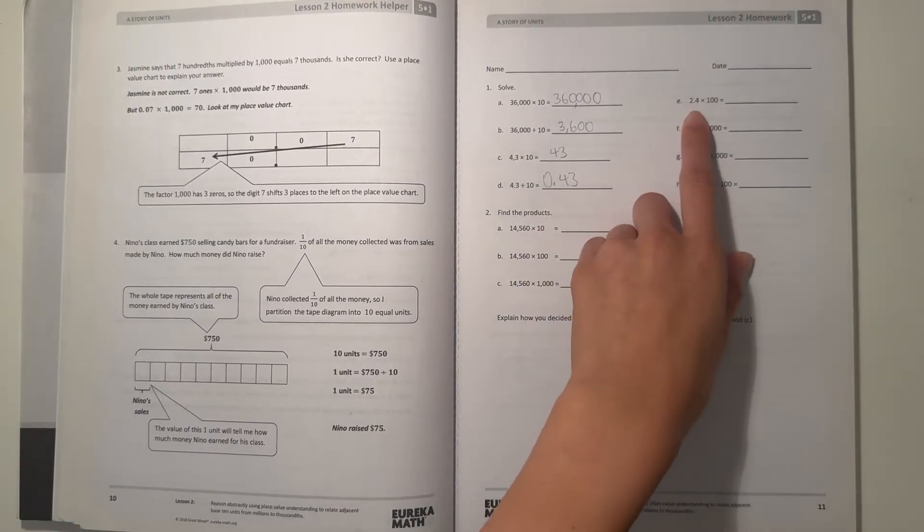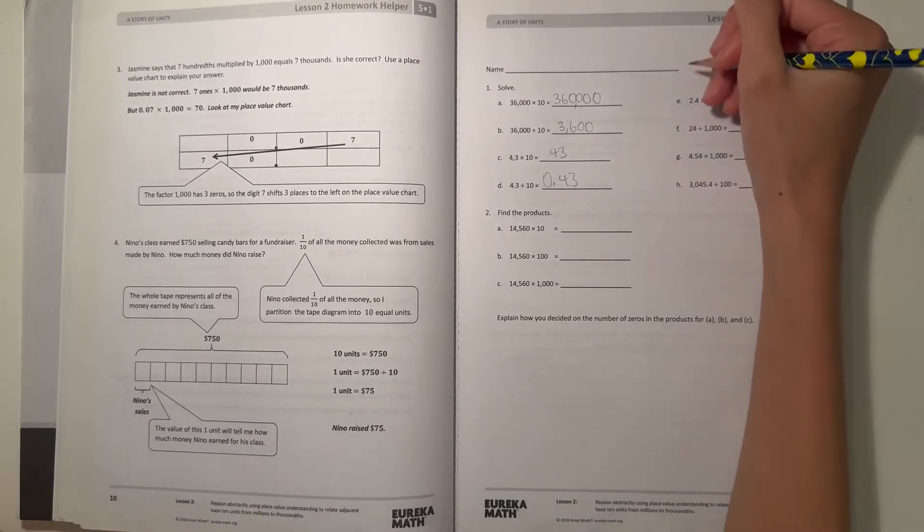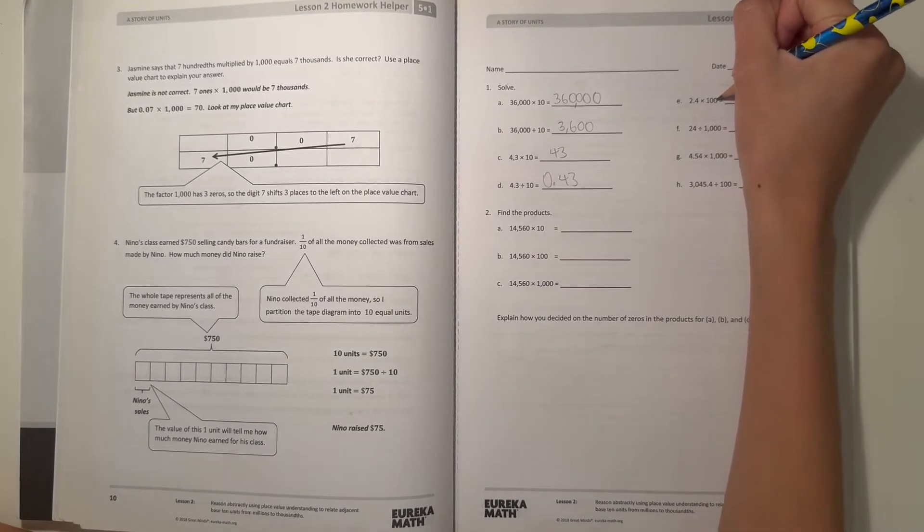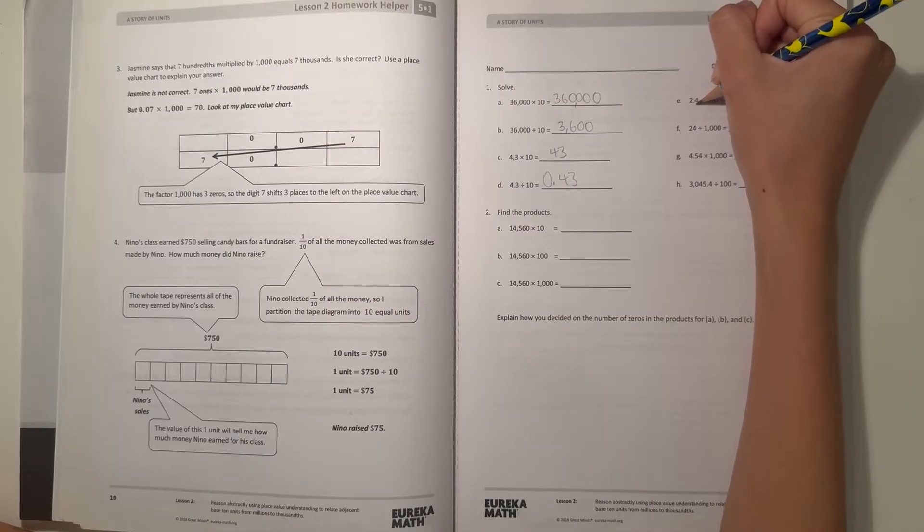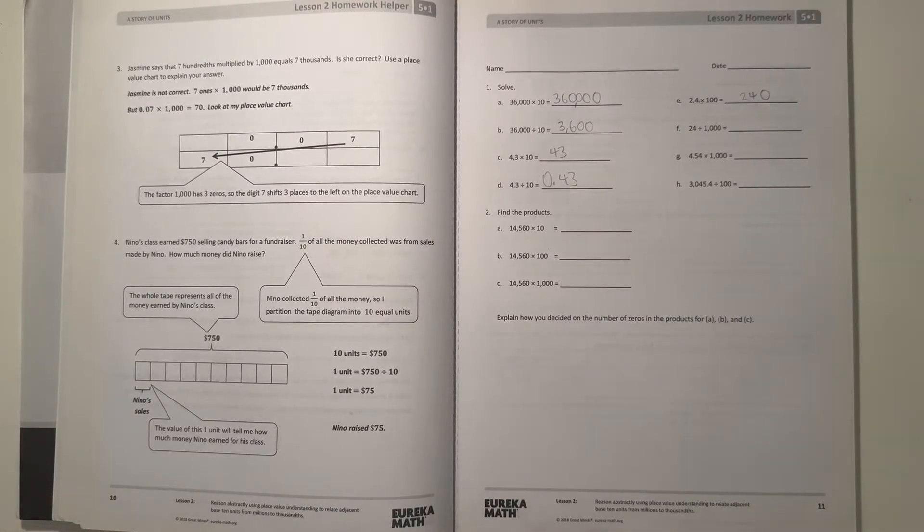Alright, and E, 2.4 times 100. So let's multiply, so let's move it two places to the right because there's two zeros in 100. So that would be 1 place to the right and then 2, so that would be 24. But then we move another place, so that would be 240.